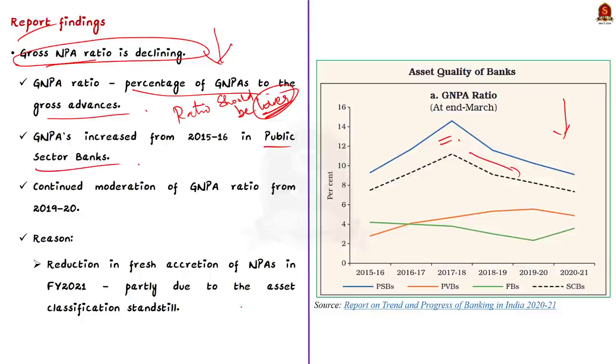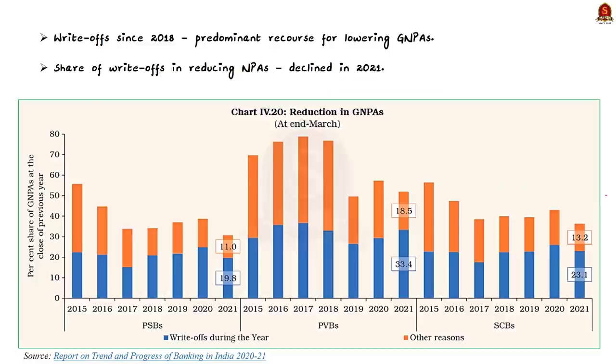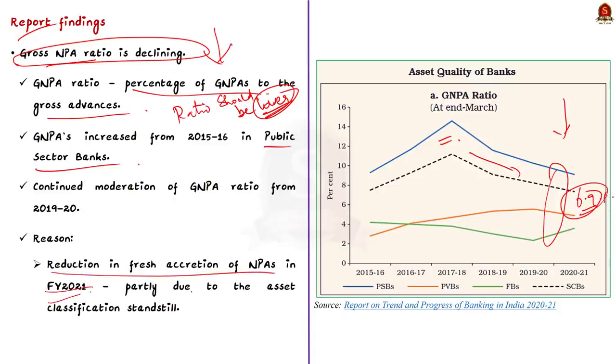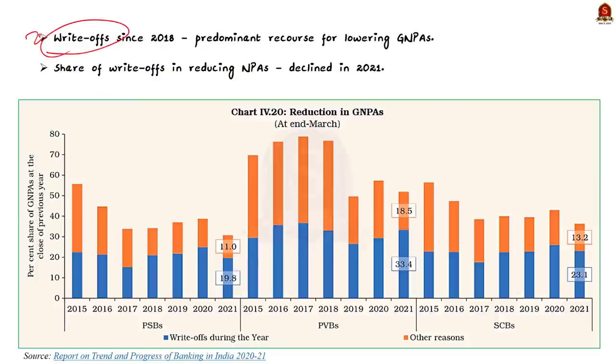But what is the reason behind this moderation that is decline? See, the first reason is reduction in fresh accretion of NPA, especially in fiscal year 2021. This reduction happened partly due to the asset classification standstill. That is, for some time, mainly due to pandemic, banks did not classify accounts as NPAs even if there were defaults. So if not classified as NPA, then it will not be considered while calculating the NPA ratio. And there is another reason for decline and it is the write-off. Since 2018, write-offs were the predominant recourse for lowering GNPAs. It was the same in 2020 to 2021. As you can see here, in financial year 2021, there was 20% write-off in PSB and overall in SCB, it was 23%. But compared to 2020, the share of write-offs in reducing NPAs has come down in 2021.